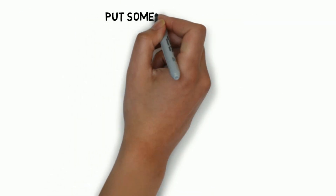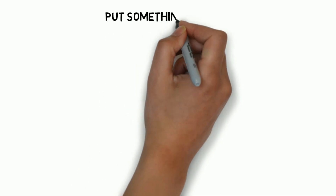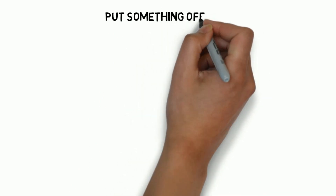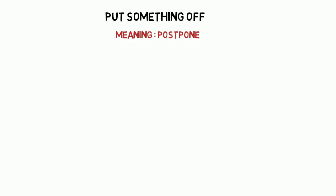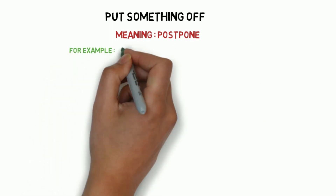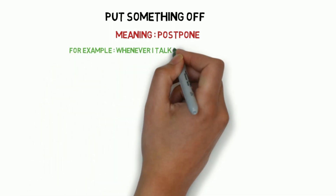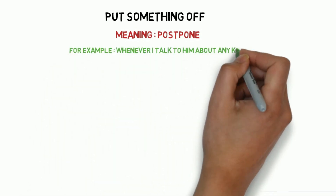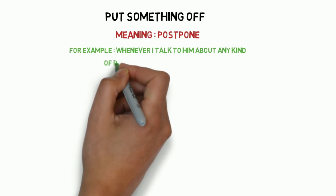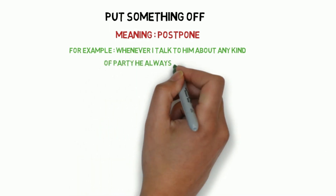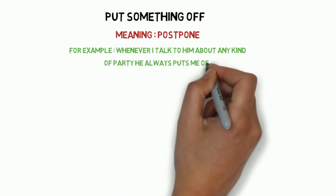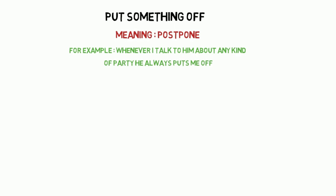Next is 'put something off,' which means to postpone — cheezoin ko talna. For example: whenever I talk to him about any kind of party, he always puts me off — jabbhi main usse kisi type ki party ke baare mein baat kerti hoon, woh hameisha taal deta hai.